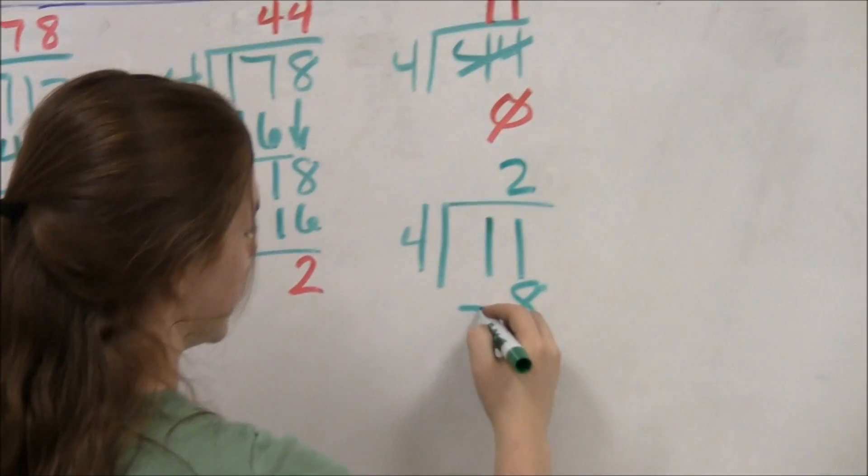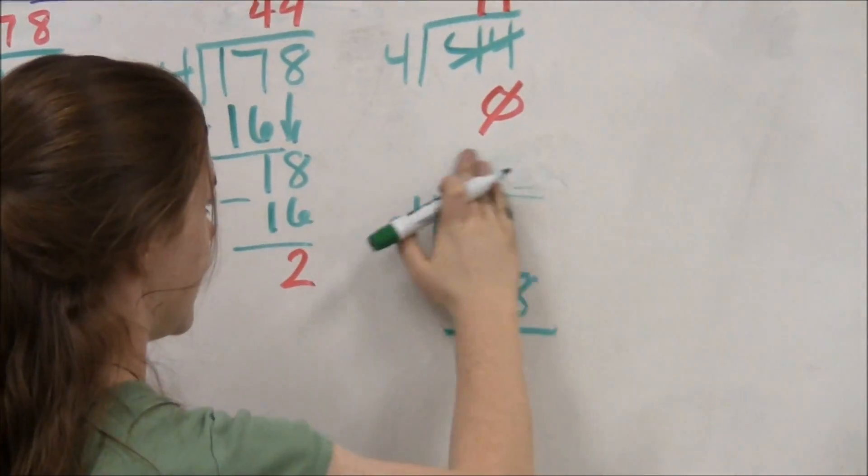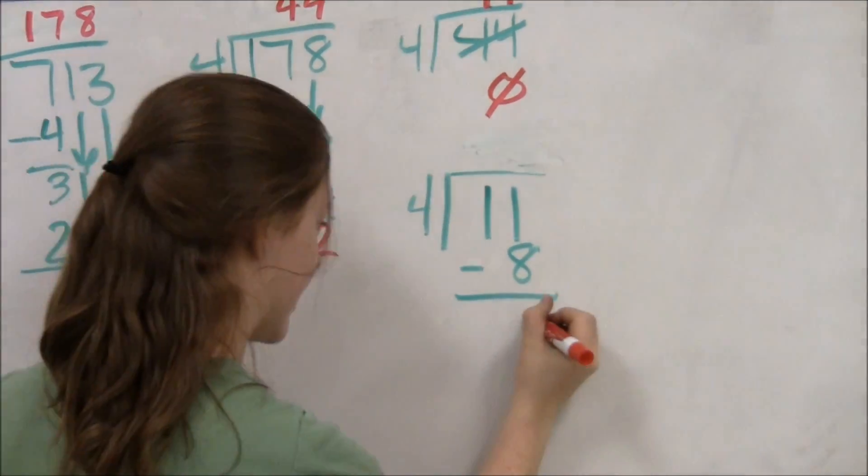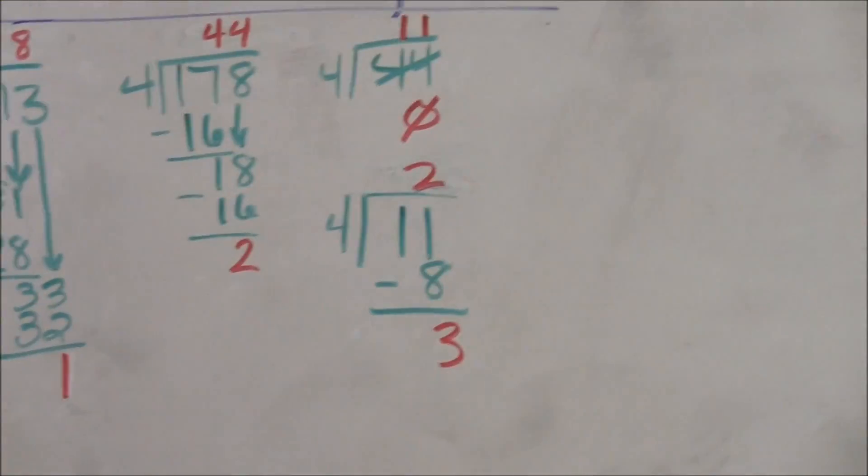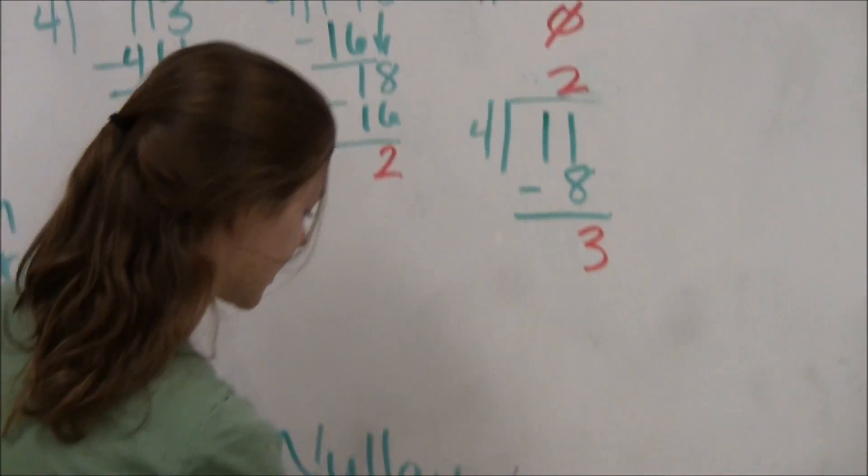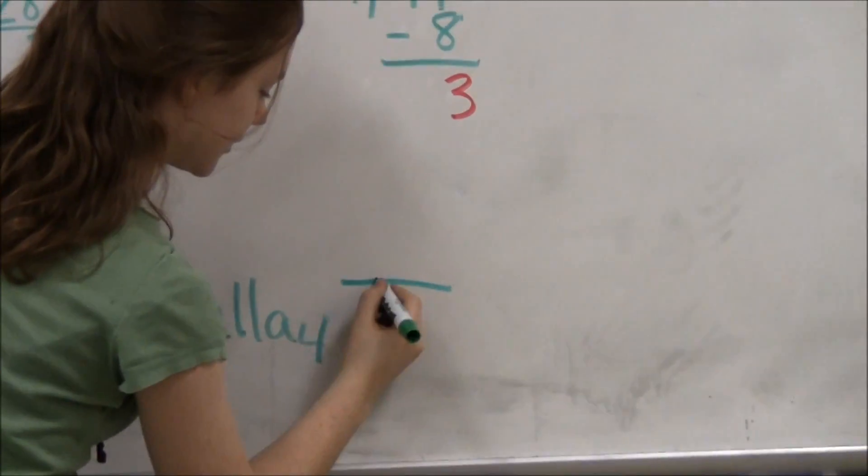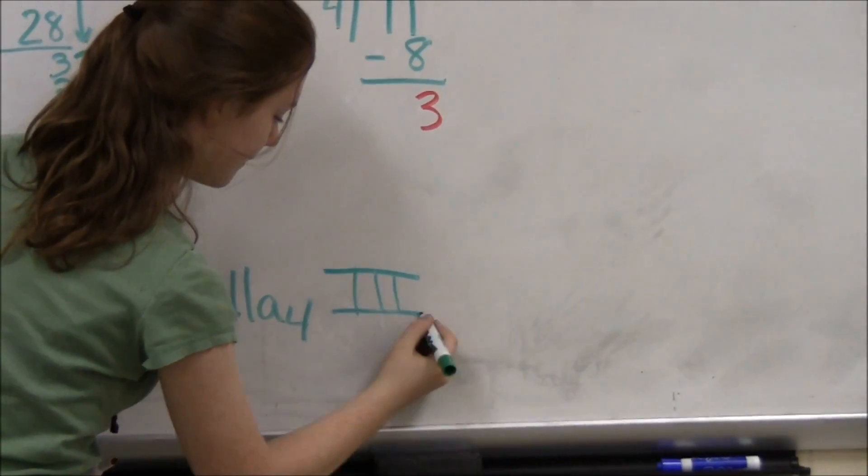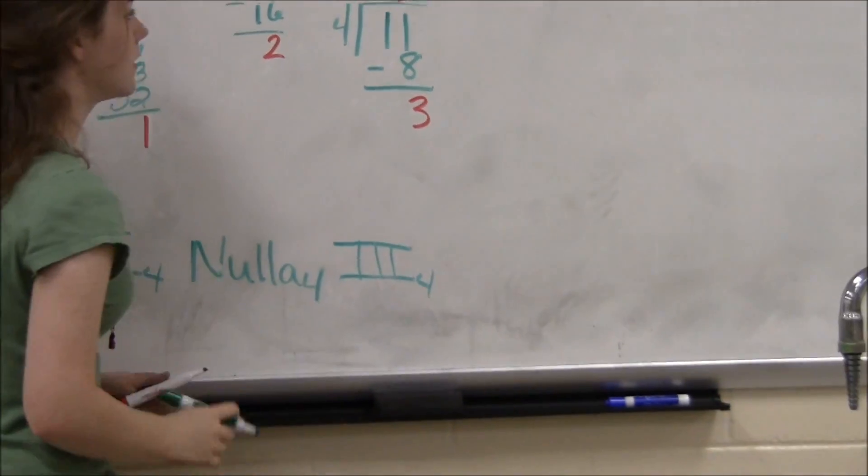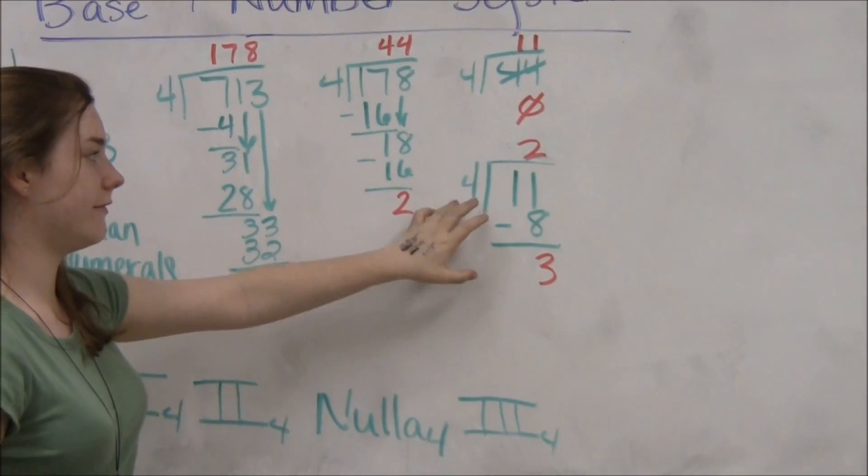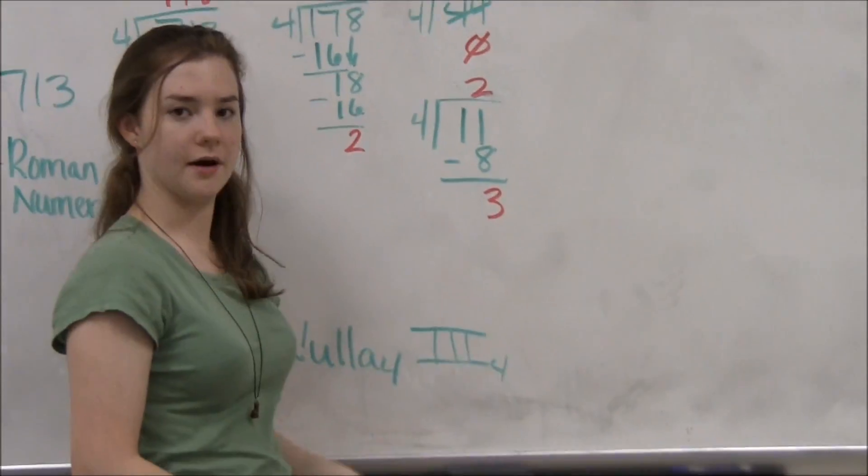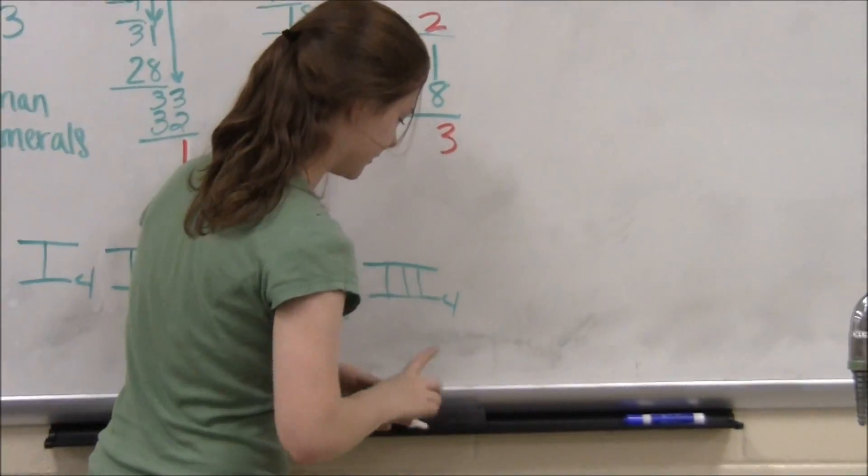That gives us a remainder of 3 and a quotient of 2. Our remainder of 3 will, once again, go down here as Roman numeral iii with a base 4. And since we can no longer divide the quotient 2 by 4, that will also come down as a Roman numeral ii.